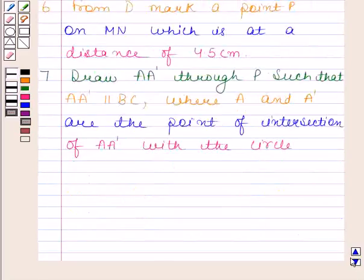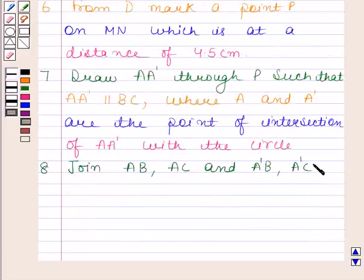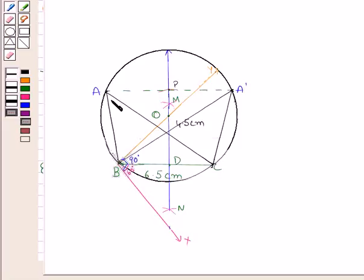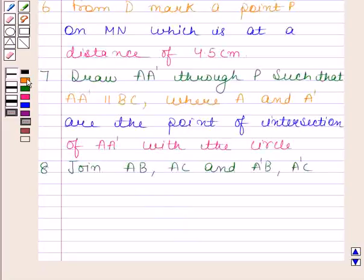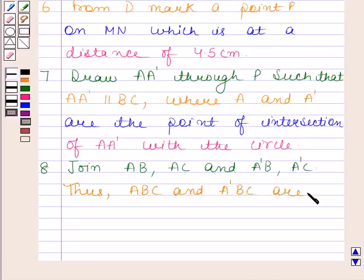In the last step, we will join AB, AC, A'B, and A'C. We have joined AB, AC, A'C, and A'B. Thus, triangles ABC and A'BC are the required triangles.